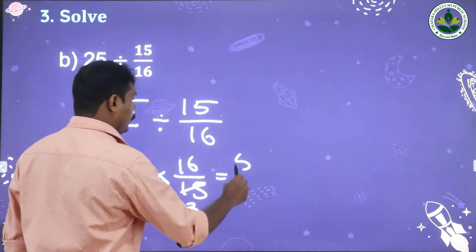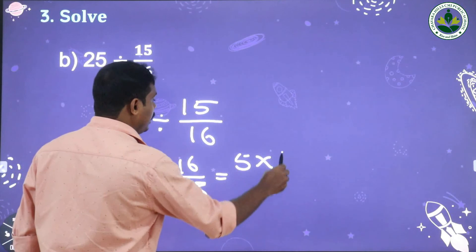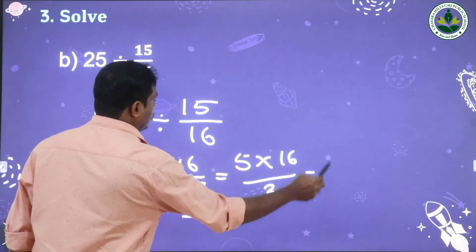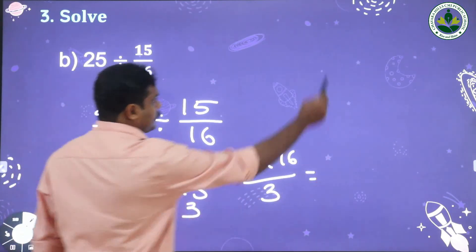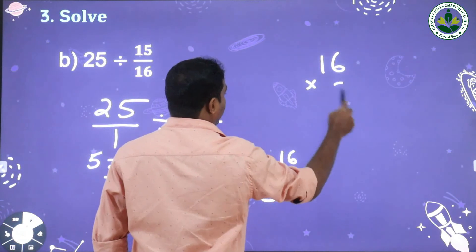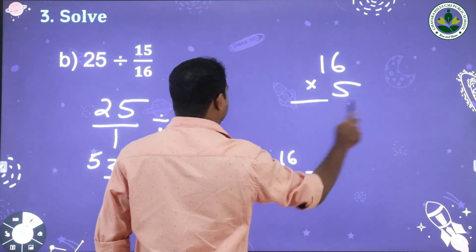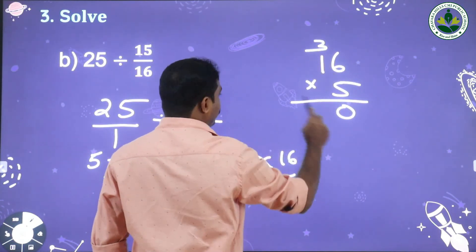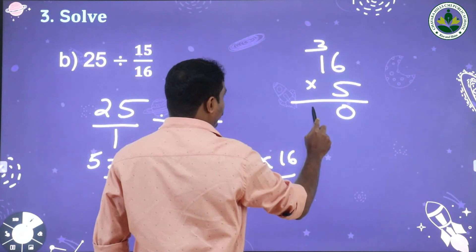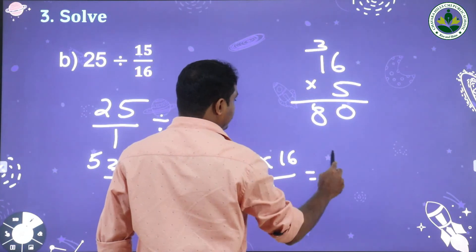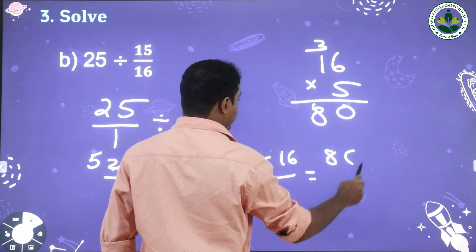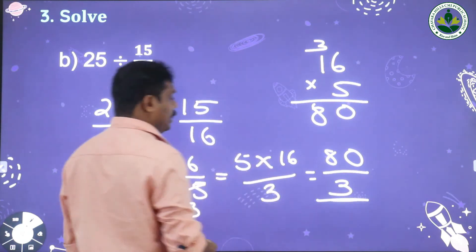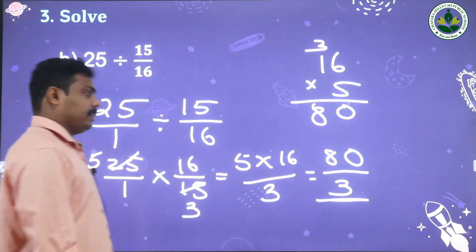Now it is 5 into 16, and 1 into 3. 5 sixteens: 5 into 6 is 30 carry 3, 5 ones are 5 plus 3 is 8. The answer is 80 divided by 3.